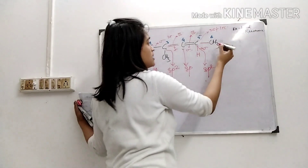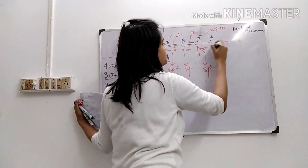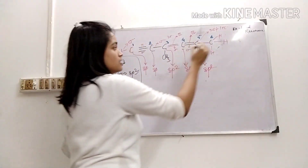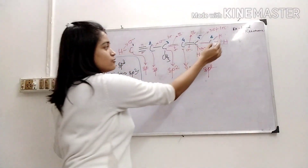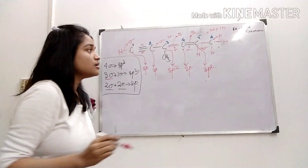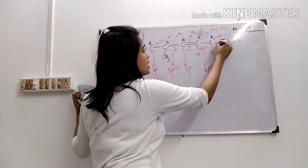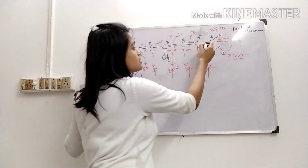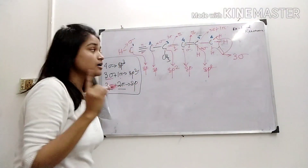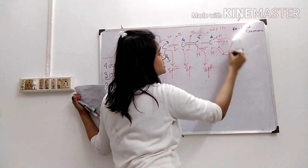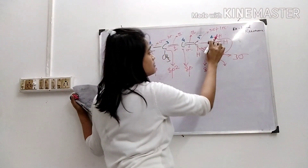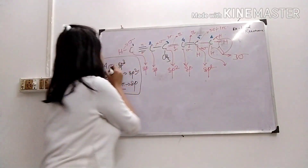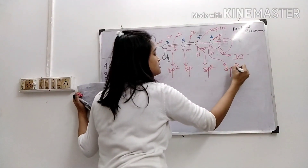Now the sixth carbon. It has one sigma bond with the fifth carbon and three sigma bonds with its three hydrogen atoms. That gives a total of four sigma bonds, which means the sixth carbon is sp3 hybridized.